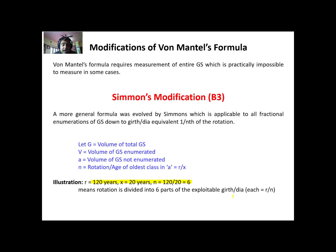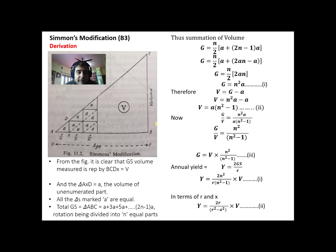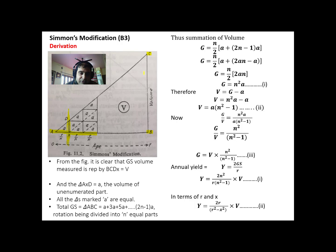Each part is equal to R upon N. To further understand this, let's look at the diagram where A, B, and C represent the growing stock. V represents the growing stock that is being enumerated up to the age or diameter X. We are going to enumerate this portion using Simmons' modification, and the left portion of triangle A is the unenumerated portion of the growing stock. We have divided the entire triangle ABC into smaller triangles, represented by a small letter 'a'.